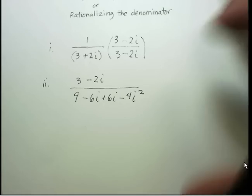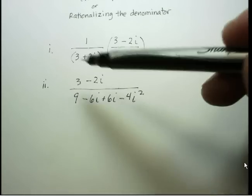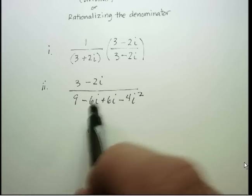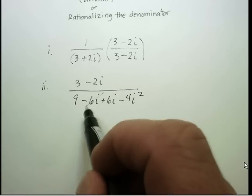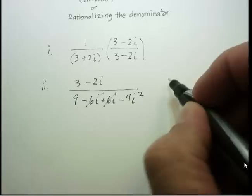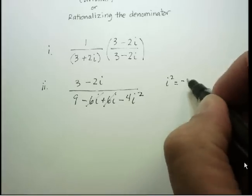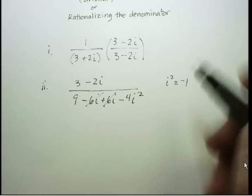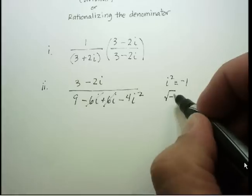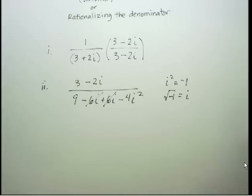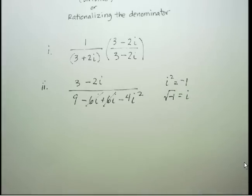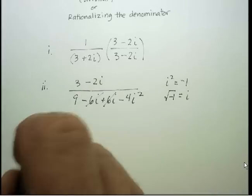Let's take a second and look at this step. In the denominator, I notice that the middle terms cancel out. I also have an i². Now i² is one of the key identities for imaginary numbers — there are two identities you really need to know: i² equals negative 1, and the square root of negative 1 is called i.